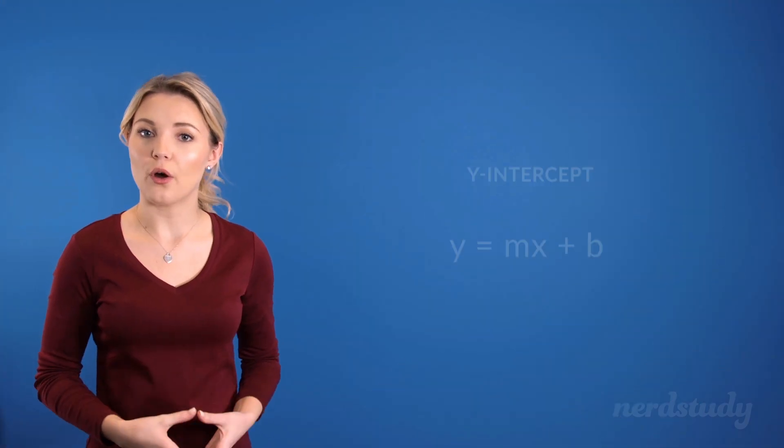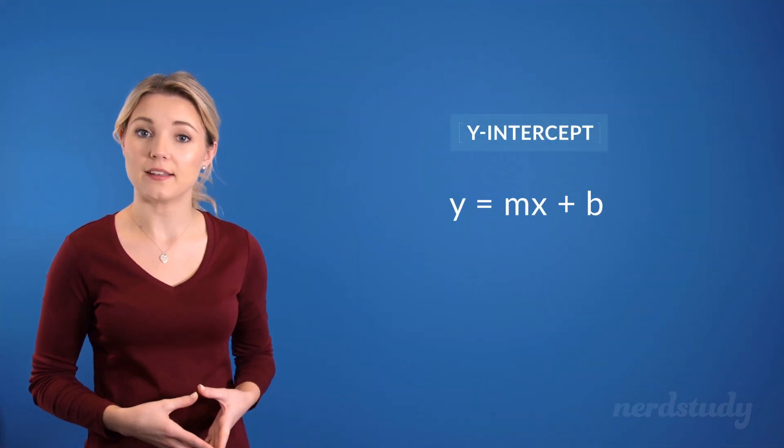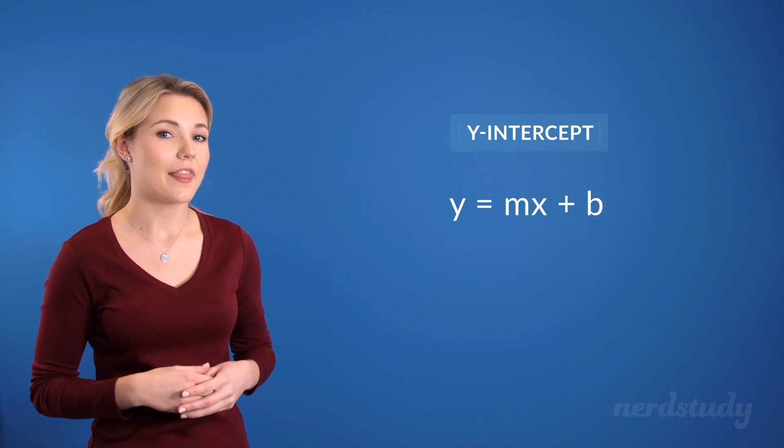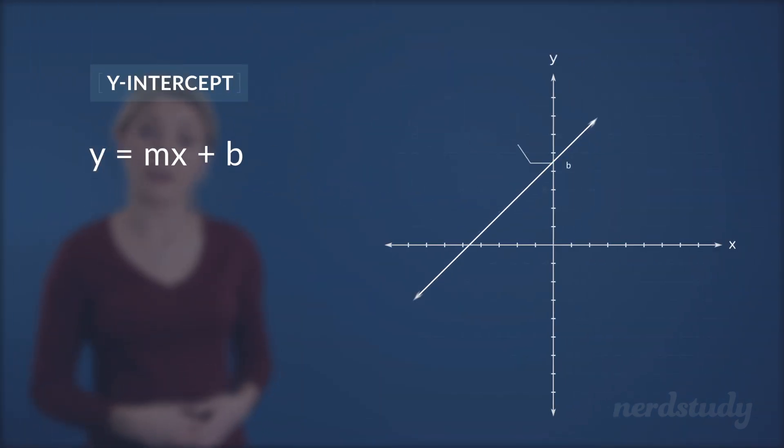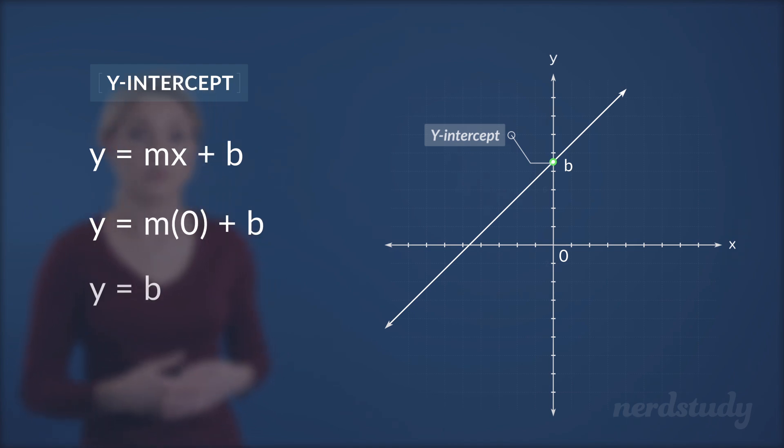Now, we know that the y-intercept can be identified by the b variable here, and that this is the point where the line intersects the y-axis when x is equal to 0. If we wanted to actually test this out, we would substitute 0 for x. And notice how, regardless of what the slope would be, we would get y equals b, making the y-intercept located at 0, b.